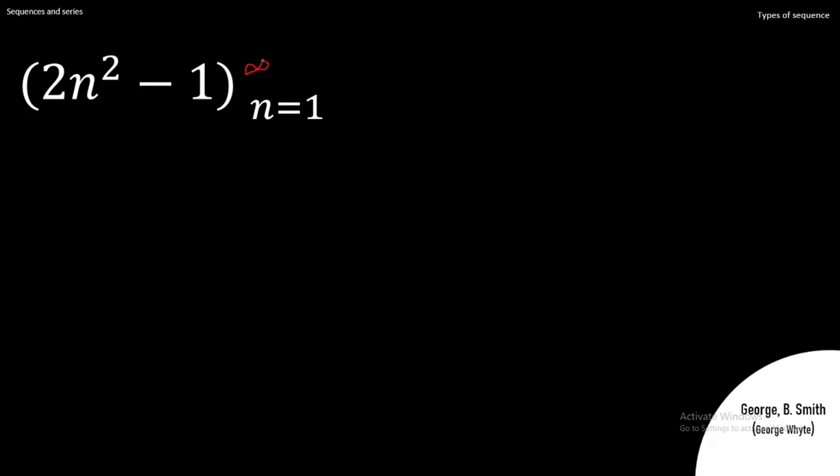Now, in this sequence, the n-th term we have is 2n² - 1. You can see here I'm not using aₙ—I'm using Tₙ. So Tₙ is taking the place of aₙ. That's the concept.